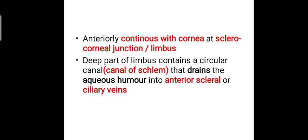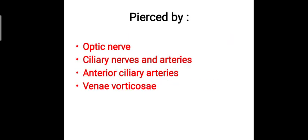Aqueous humor is a jelly-like fluid present in the anterior chamber of the eyeball, which is drained into the anterior scleral or ciliary veins through the canal of Schlemm. The sclera is also pierced by the optic nerve, ciliary nerves and arteries, anterior ciliary arteries, and the venae vorticosae. That concludes the sclera.